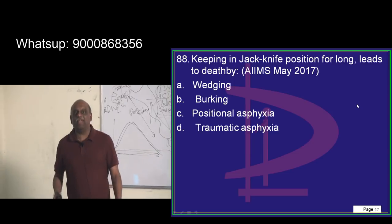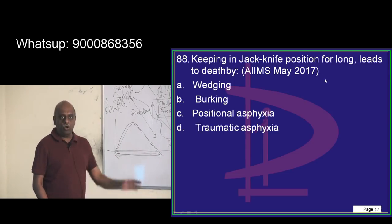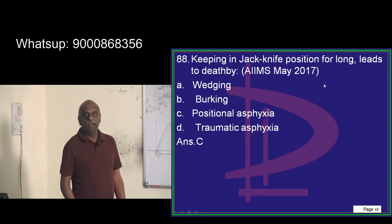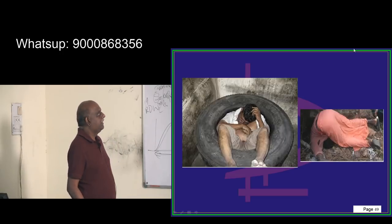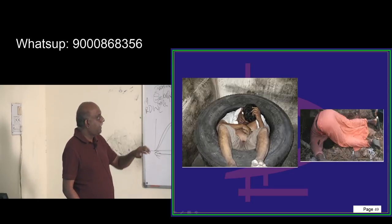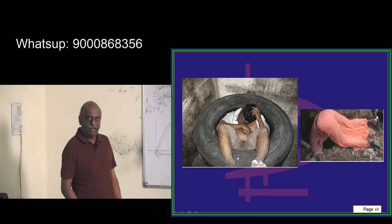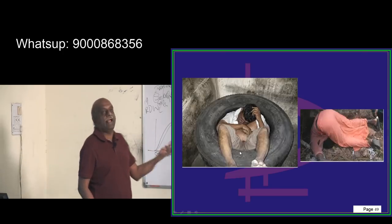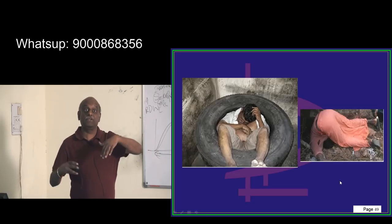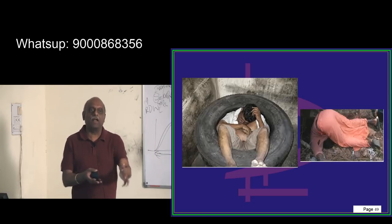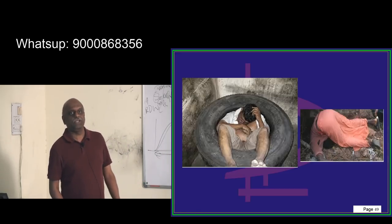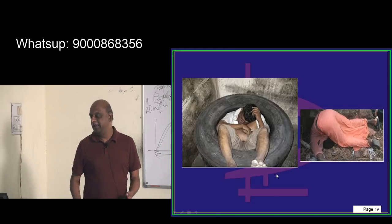If you keep someone in a jackknife position for a long period of time, what leads to death? It is called positional asphyxia. The classic example is a person packed in a jackknife position inside a rubber tire. Similarly, when large buildings collapse and people become trapped in small, closed spaces in a jackknife position, they can die of positional asphyxia.